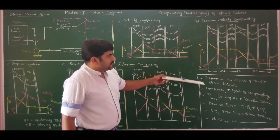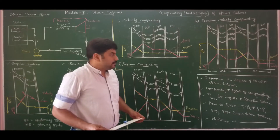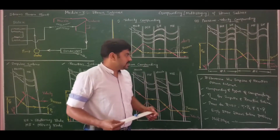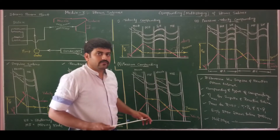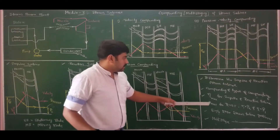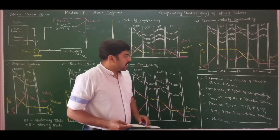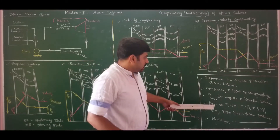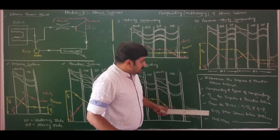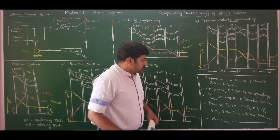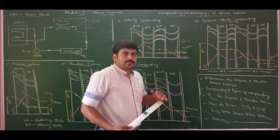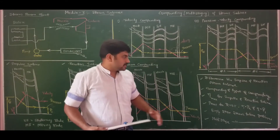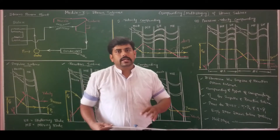In today's lecture we will discuss the difference between impulse and reaction steam turbines, and the need for and types of compounding. In our next lecture we will derive expressions for maximum blade efficiency of impulse turbines and 50 percent degree of reaction turbines, and prove that for 50 percent degree of reaction, alpha1 equals beta2 and alpha2 equals beta1. For solving problems, we will use a graphical method since analytical approach was already covered in lectures 8, 9, and 10 of Module 2.